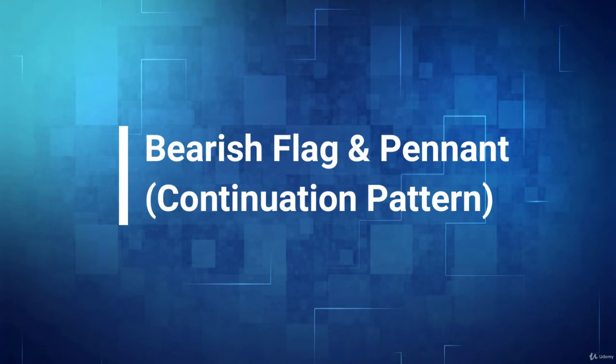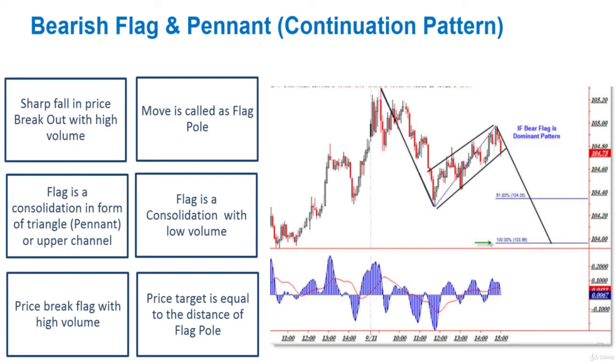Now we discuss the bearish flag and pennant, which is a continuation pattern in the middle of a downtrend. There is a sharp fall in price with a breakout on high volume — this is considered to be the pole. The flag is a consolidation in the form of a triangle, which is called a pennant, or it may form an upward channel. The flag consolidation occurs with low volume.